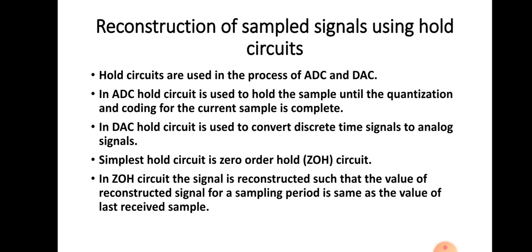In the case of analog to digital conversion process, or ADC process, the hold circuit is used to hold the sample until the quantization and coding for the current sample is completed. That means the value of the signal is held for some time, up to the quantization and coding of the current sample is completed. That is the purpose of the hold circuit in the case of analog to digital conversion.